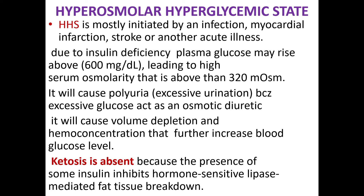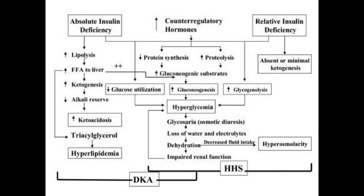In HHS, polyuria occurs — excessive urination because excess glucose acts as an osmotic diuretic — causing volume depletion and hemoconcentration, further increasing blood glucose. Ketosis is absent — this is a very important differentiating point between HHS and DKA. The absence of ketosis is because the presence of some insulin inhibits hormone-sensitive lipase-mediated fat tissue breakdown.